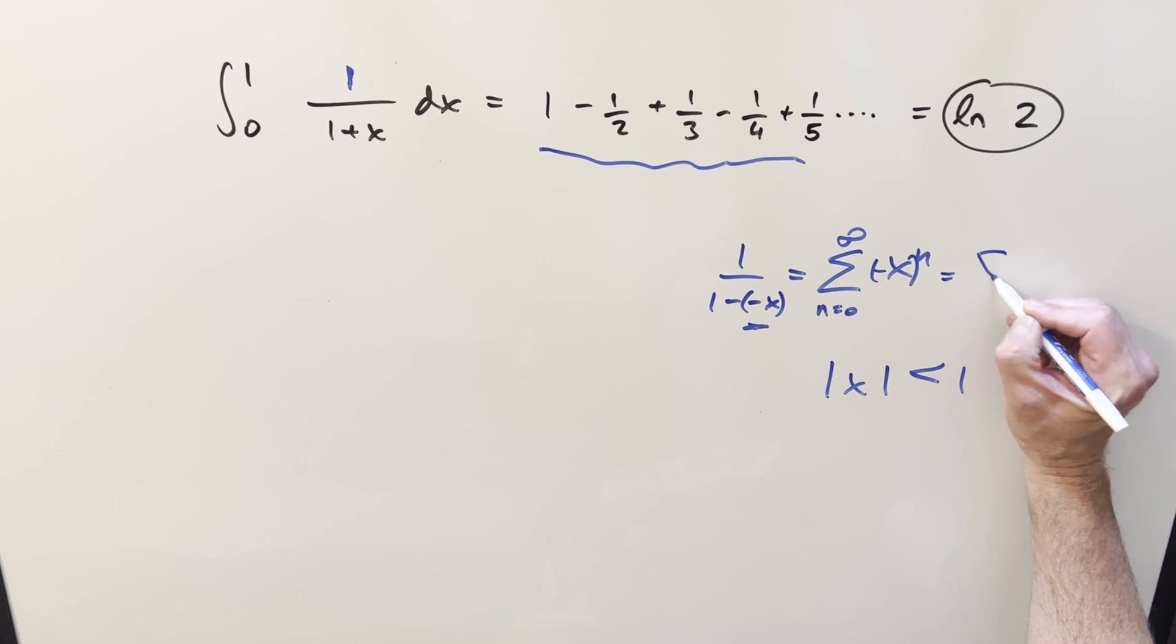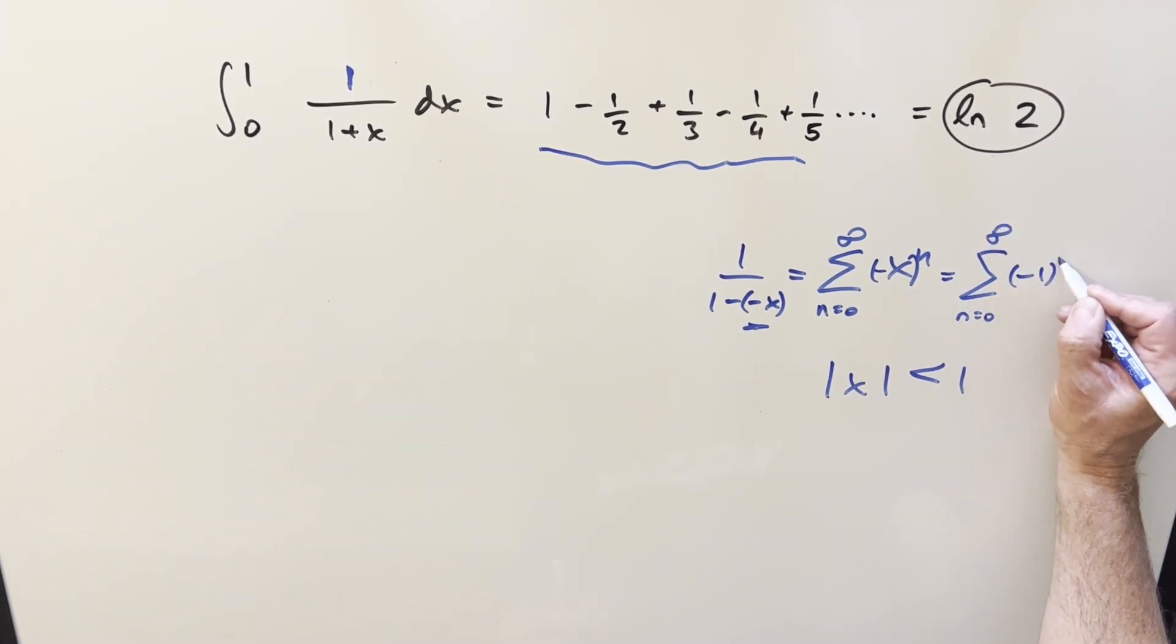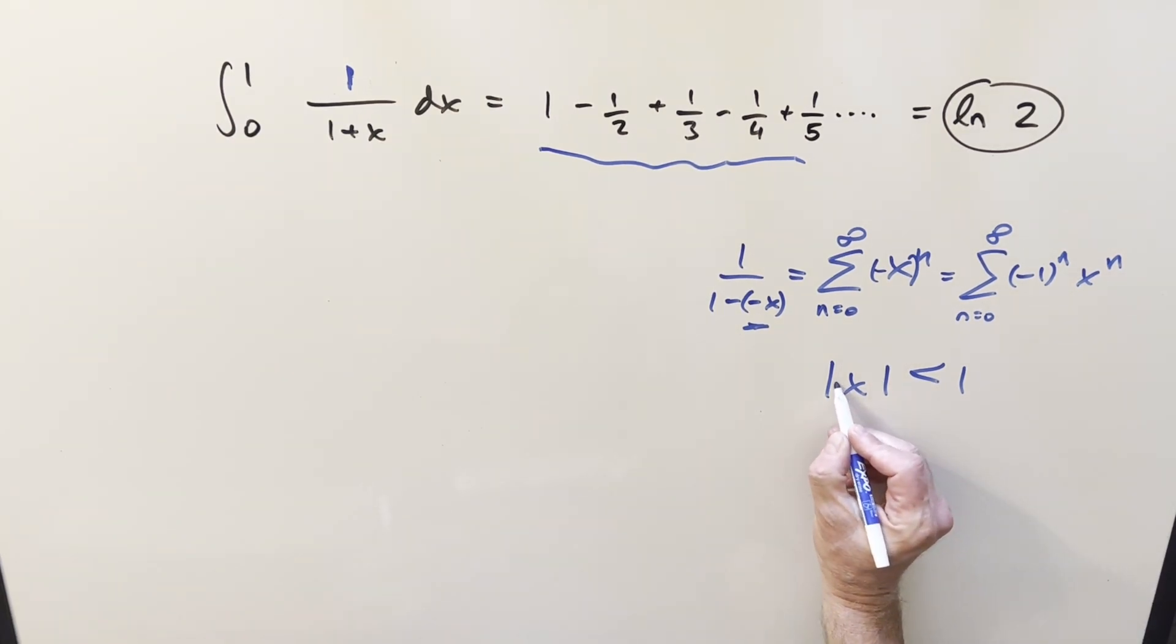Then we need this to be a minus right here. But then we can rewrite this and break this up a little differently. We can write this as minus 1 to the n times x to the n. Now for our convergence, technically we need a minus sign in here, but because we've got absolute value, that doesn't even matter. So we just need absolute value of x to be less than 1.